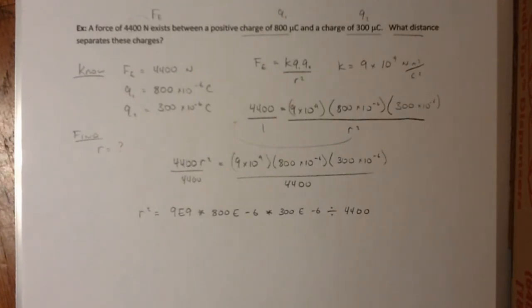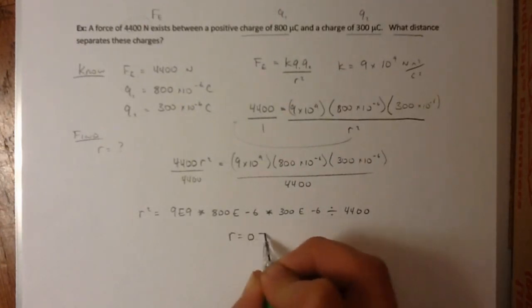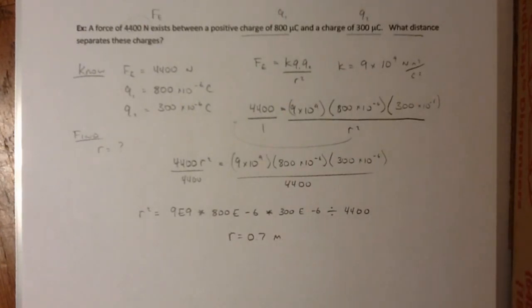So I would suggest that you pause the video, you actually get out your calculator, you practice doing these numbers, and just get familiar with using the calculator with these numbers. But I'm not there, so I can only tell you to do the right thing. But hopefully you're going to pause the video and calculate this out, and you should get an R value of 0.7 meters. So that's just a quick example of using electrostatic force.